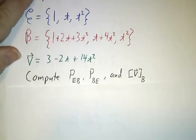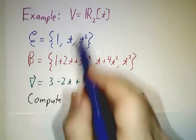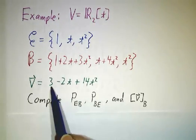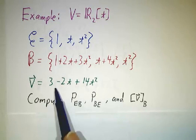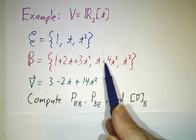And we're given a vector. The vector is an element of this space. It's a polynomial, 3 minus 2t plus 14t squared. And the object is we want to figure out what are the change of basis matrices in both directions, P_EB and P_BE. And we want to find the coordinates of this v vector, not in the original e basis, but in the b basis.